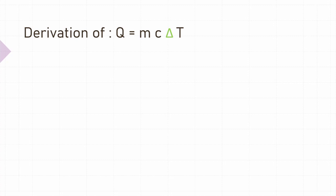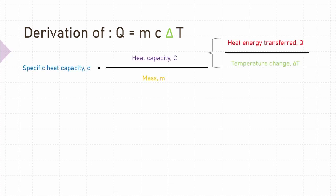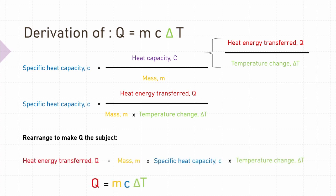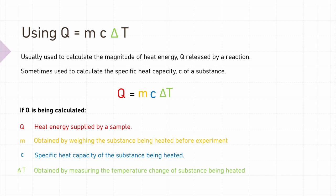The equation q = mcΔT can be derived by starting with the equation for specific heat capacity. We know that specific heat capacity of a substance is the heat capacity per unit mass. By substituting in the formula for heat capacity, we get: specific heat capacity equals Q over m times ΔT. When we rearrange the equation to make Q the subject, we end up with the equation q = mcΔT.